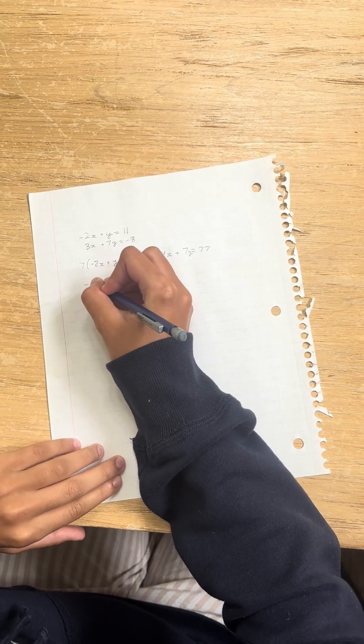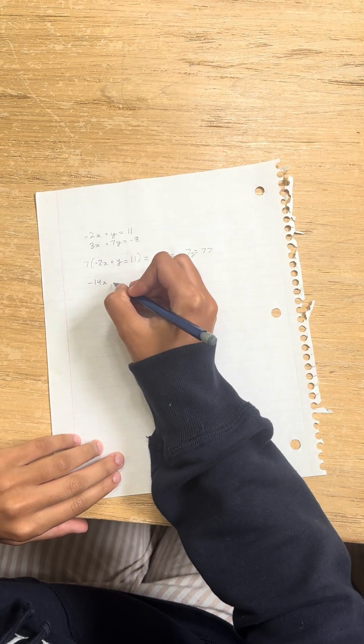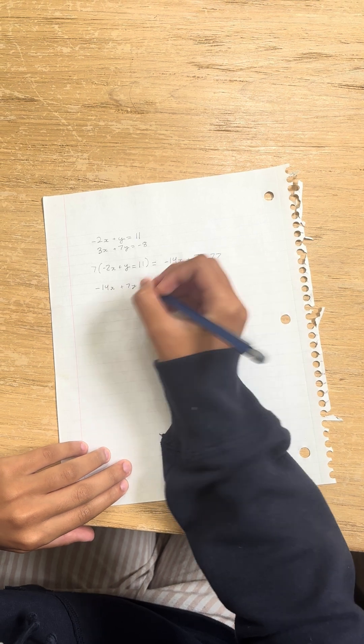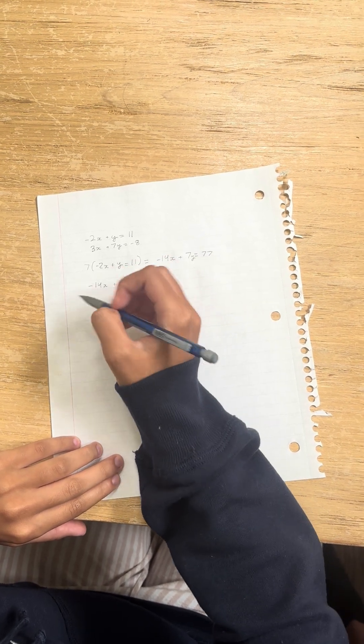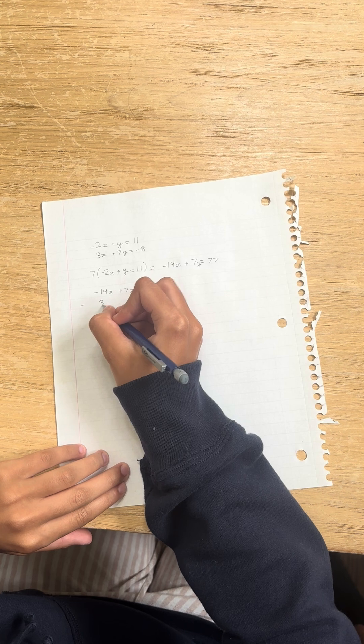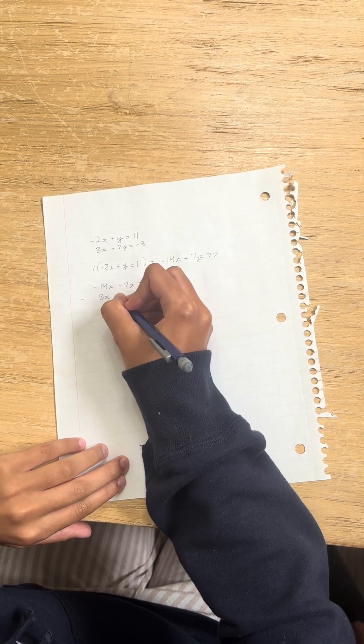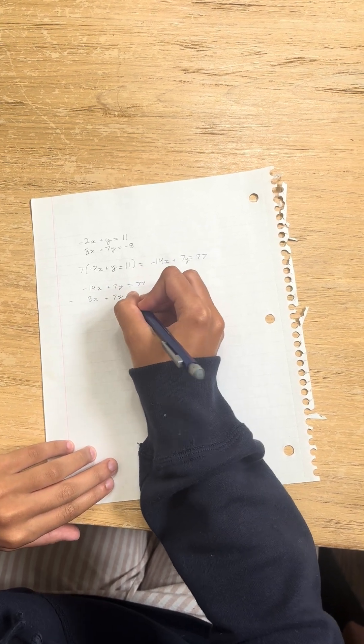So I'm going to bring this equation down: minus 14x plus 7y equals 77. And we're going to put this equation down as well. So we have 3x plus 7y equals negative 8.